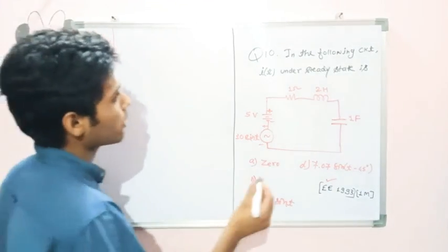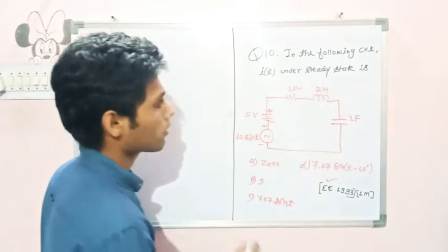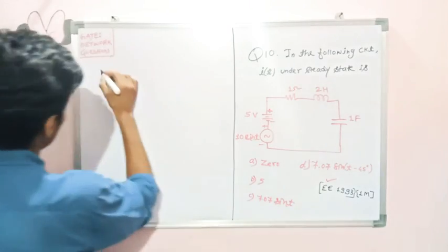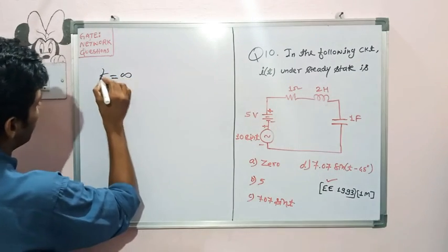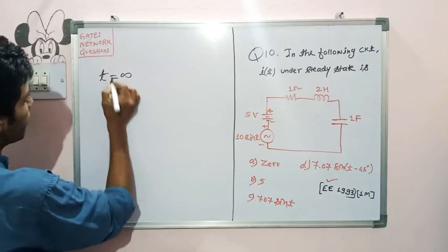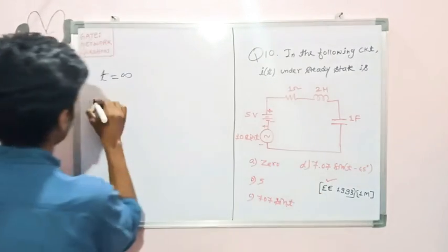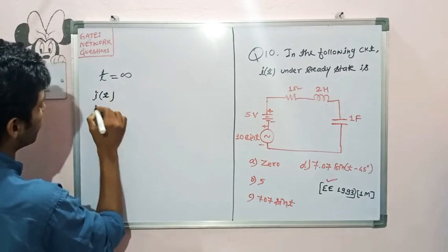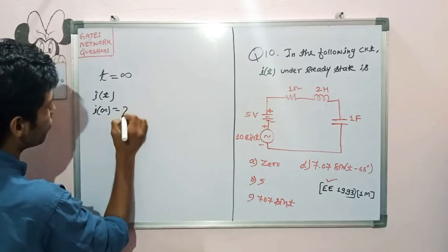The question says: in the following circuit, find I under steady state condition, which means at t equals infinity. After a large amount of time, what will be the value of I(t)? We have to calculate I(infinity).